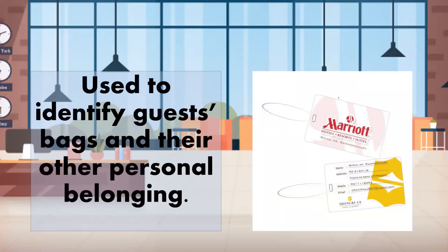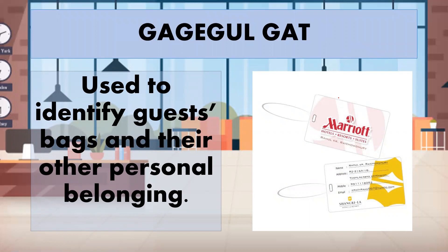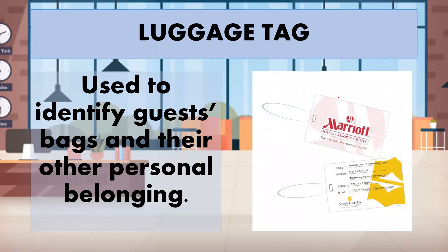Next — this is used to identify guests' bags and their other personal belongings. This is called the luggage tag. You may have attached one to your own bag indicating 'This is my bag' with your name. However, in the hotel, it usually has the room number so the porter or bellboy does not deliver luggage to the wrong guest. It is attached to the baggage so nothing gets lost.